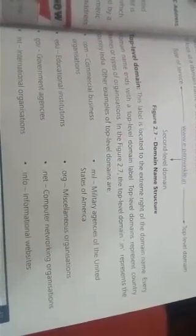Other examples of top level domains are: .com — Commercial Business Organization; .edu — Educational Institutions; .gov — Government Agencies; .int — International Organizations; .mil — Military Agencies of the United States of America; .org — Non-commercial Organizations; .net — Computer Networking Organizations; .info — Informational Websites.